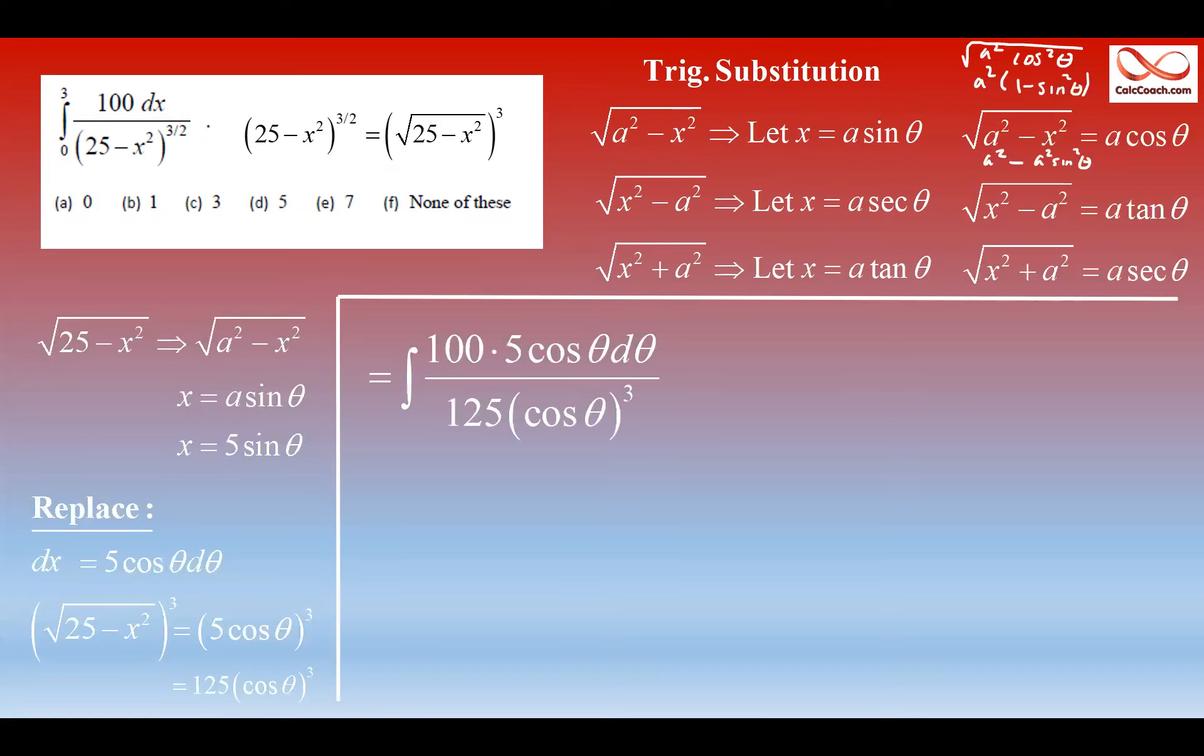Here we go. Plug these guys in. A hundred times the dx, and then the denominator, 125 times cosine cubed. Well, do some canceling. The cosine theta from the numerator can cancel with one of those three guys from the denominator, giving us two more still there. And five times 100 is 500, and 125 goes into 500 four times. So, you have a four in the numerator, and a cosine squared in the denominator, and the d theta, of course.